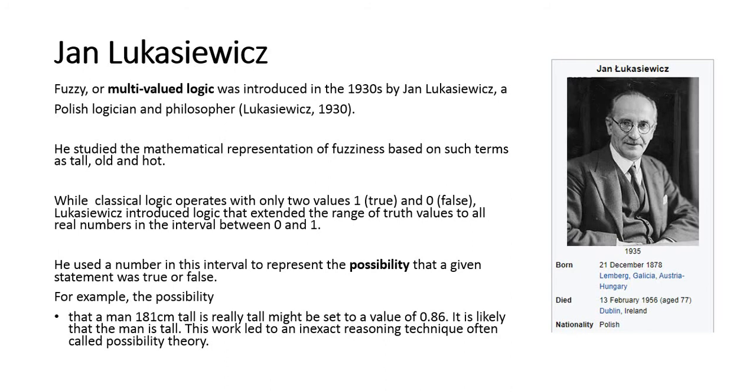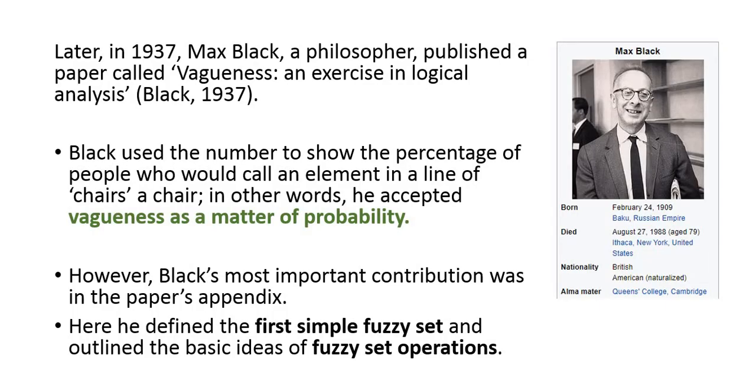Jan Lukasiewicz introduced the multi-valued logic in the 1930s. This interval represents the possibility that a given statement was true or false. Next, Max Black introduced the vagueness of the matter of probability.